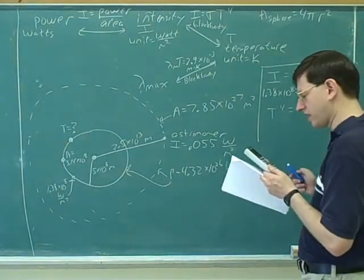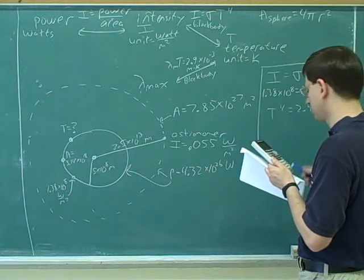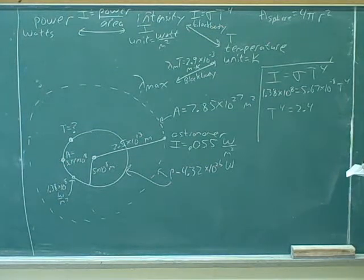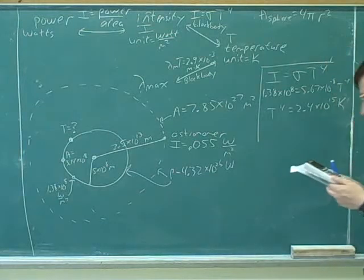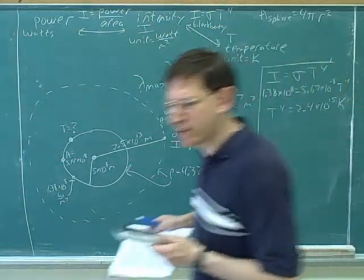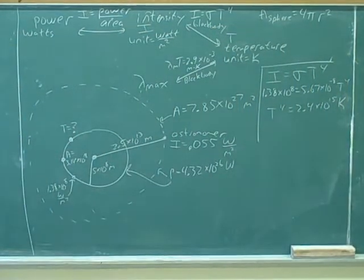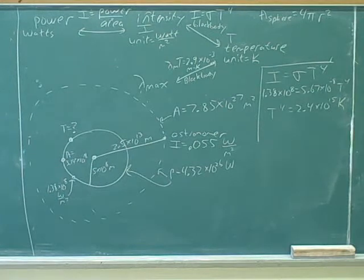And now what did you get again? 2.4 times 10 to the 8th. 10 to the 8th? I mean 15th. Okay. And that would be in Kelvins. 2.4 times 10 to the 15th. Okay. And let's see. What type of calculator do you have? 2.4 times 10 to the 13th. I did this. 4x answer. Yeah, that's right.